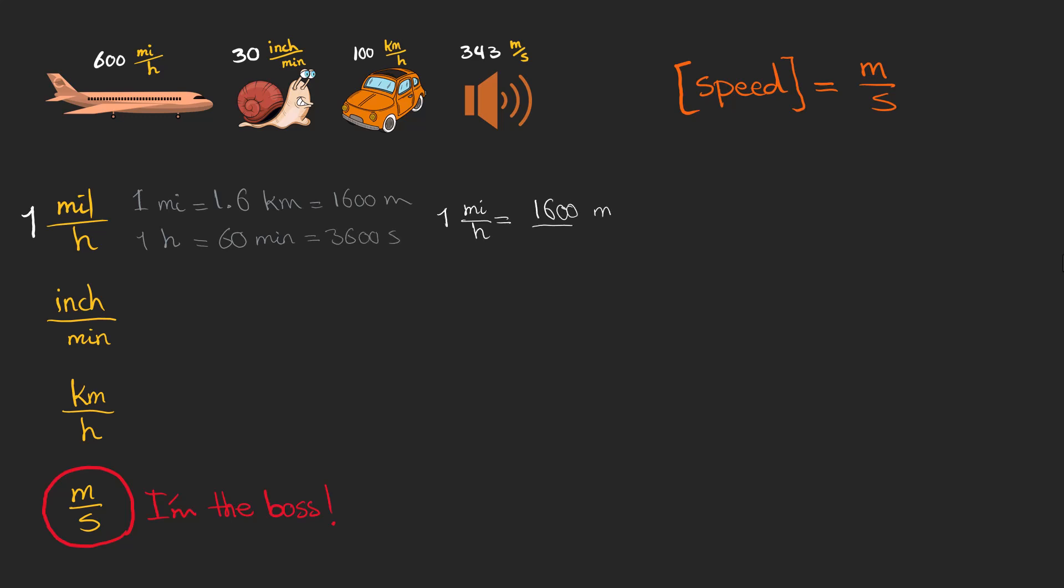So 1 mile per hour is equal to 1,600 over 3,600 meters per second, which is 4 over 9 meters per second. So the speed of the plane in meters per second is 267.